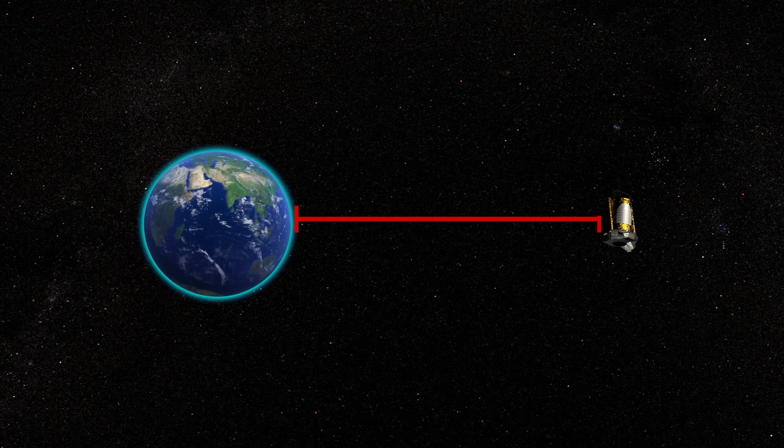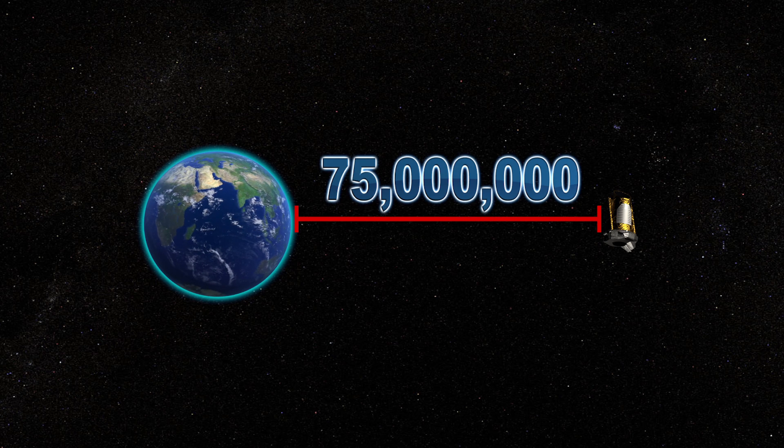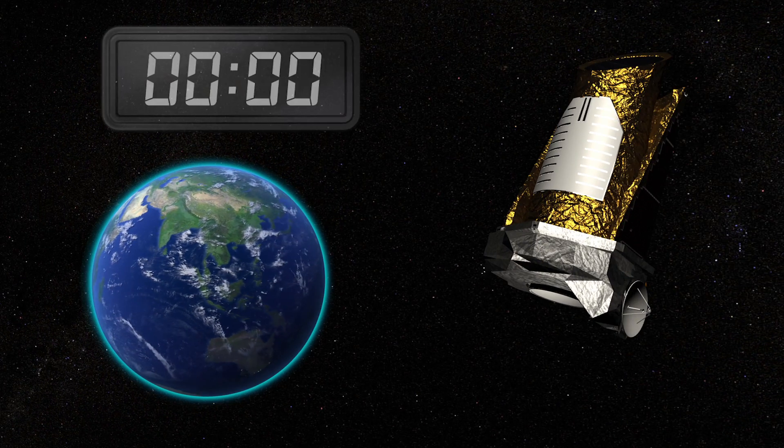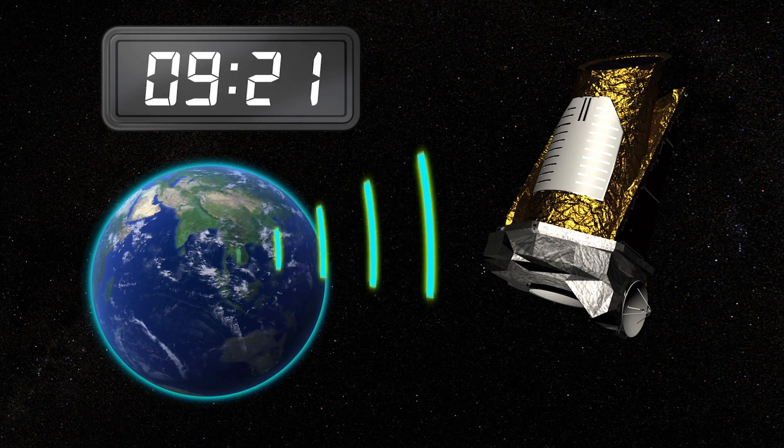With the Kepler nearly 75 million miles from Earth, it takes 13 minutes for any signal to travel to the spacecraft and back, even at the speed of light.